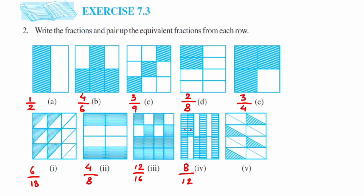The last figure has triangles. Let me recount: 1, 2, 3, 4, 5, 6, 7, 8 — yes, 16 triangles in total, and out of those, 4 are shaded. So that's 4 upon 16.